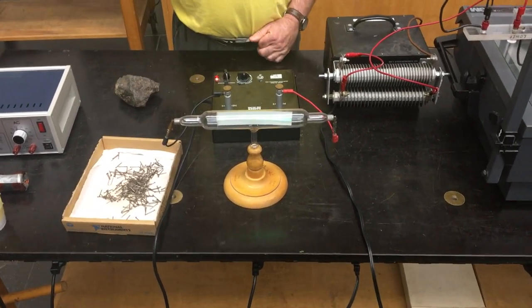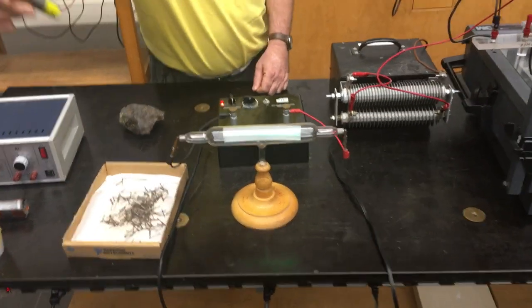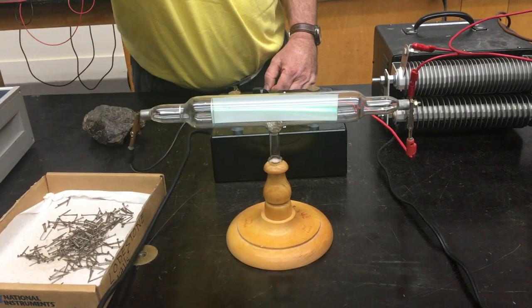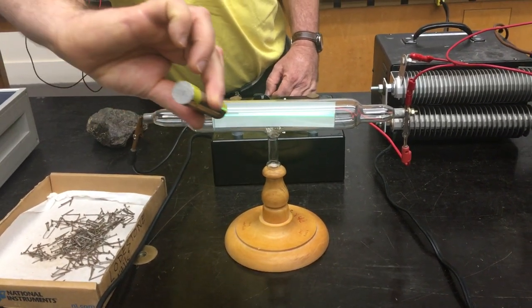I'm going to take a magnet and show that I can deflect the path of the electrons with a magnetic field. That's one pole. Let me take the opposite pole.